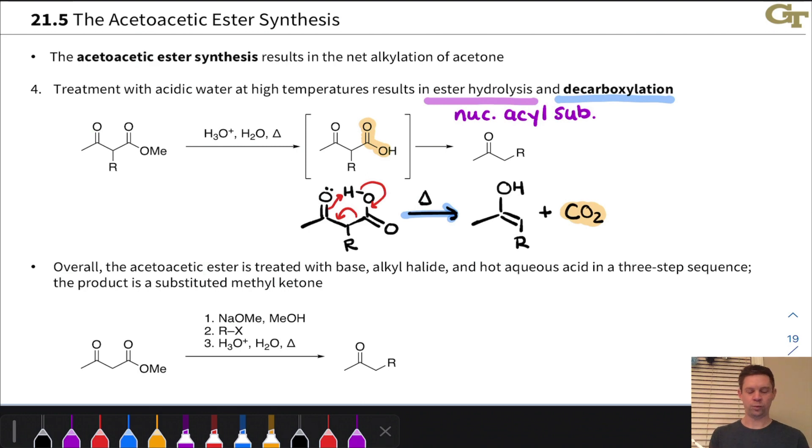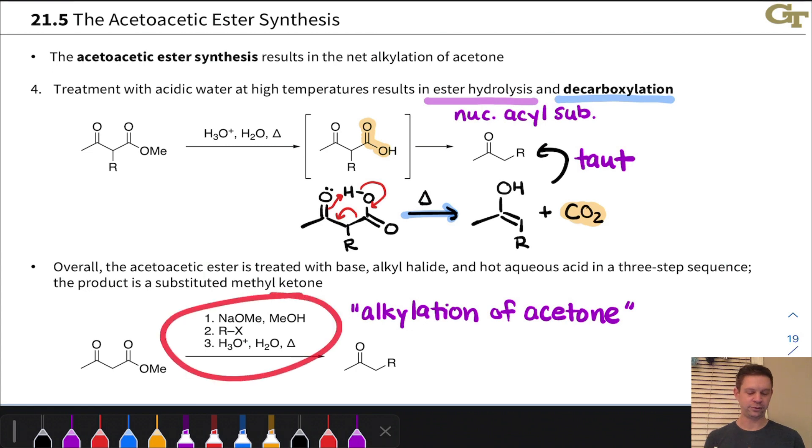So notice here the product as well. In the malonic ester synthesis, this was an OH, and we ended up with a substituted carboxylic acid. In the acetoacetic ester synthesis, this is now a methyl group. So what it looks like we've done overall is alkylated acetone. And let me back up just really quickly. Notice this enol tautomerizes to the keto form of the ketone product, and this is what we actually isolate. This is the major product of the reaction. And what it looks like we've done through this deprotonate SN2 alkylation and then hydrolysis plus decarboxylation approach is the alkylation of acetone.